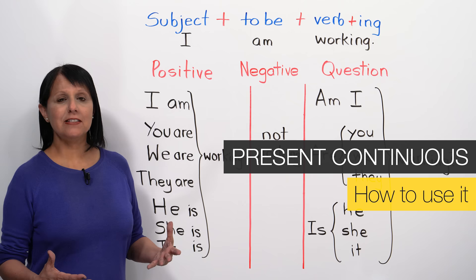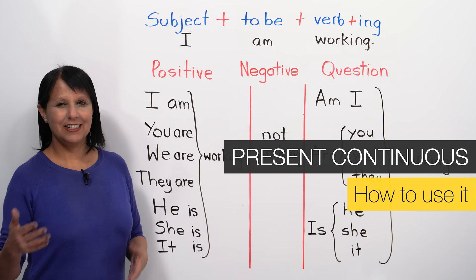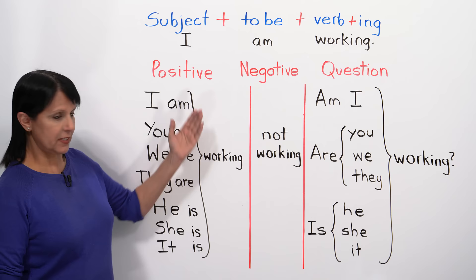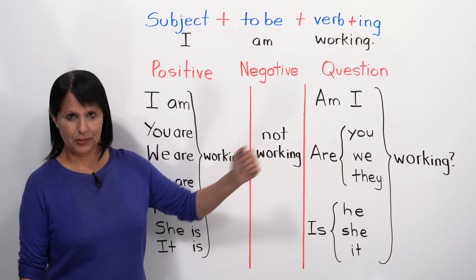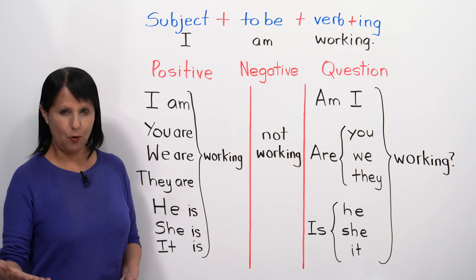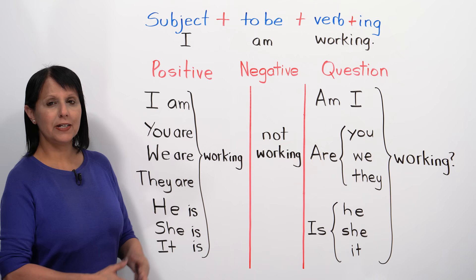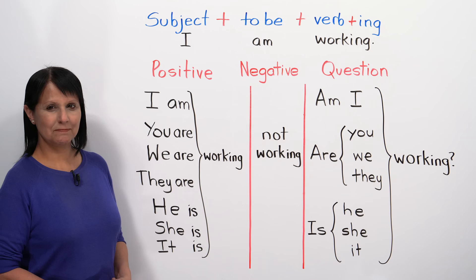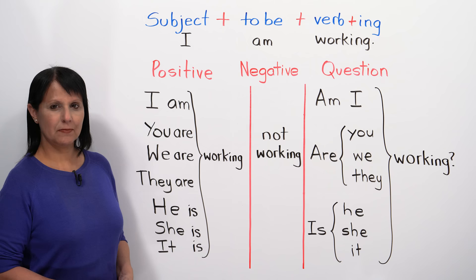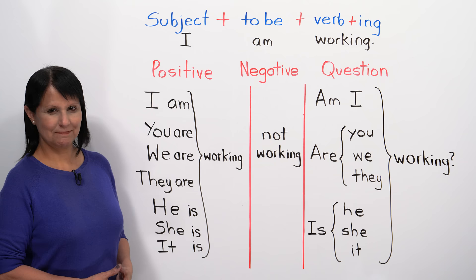Now let's look at how we form the full present continuous tense. You can repeat after me. Positive sentences: I am working, you are working, we are working, they are working, he is working, she is working, it is working.